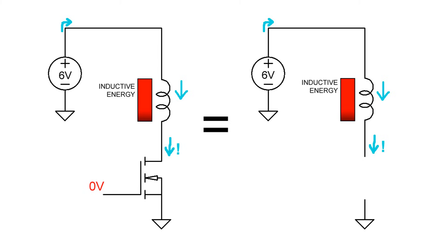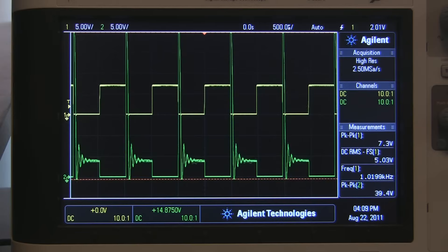But there's nowhere for this current to flow. So what happens is that the voltage will build up and up and up until all of the stored inductive energy has been turned back into electrical energy. So we get this gigantic voltage spike on the transistor's drain.